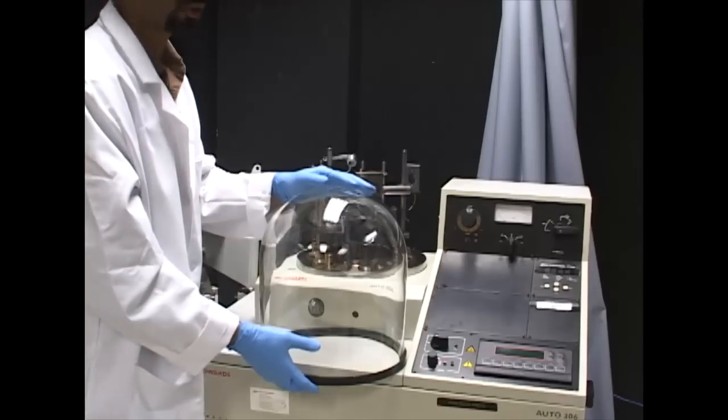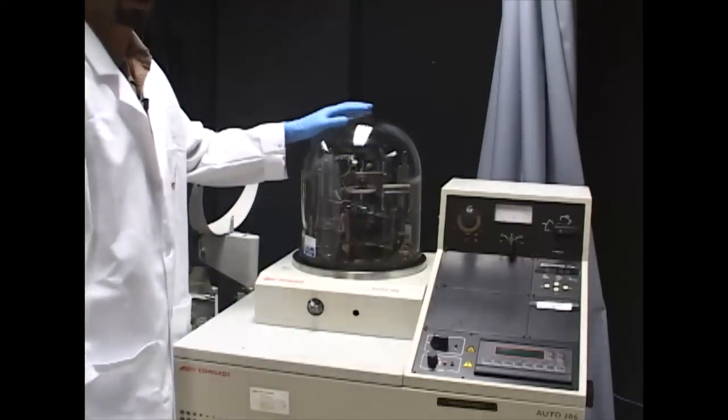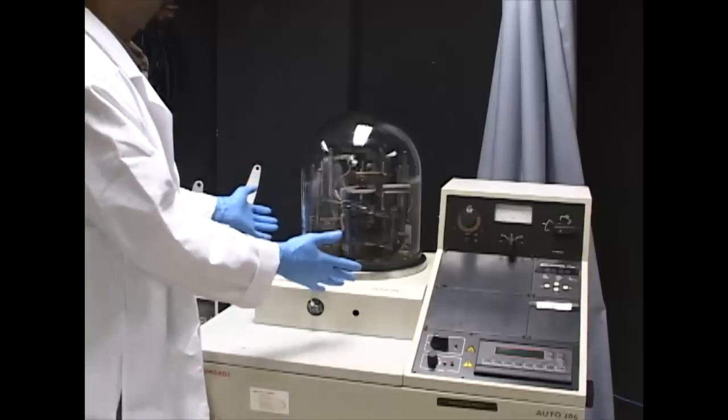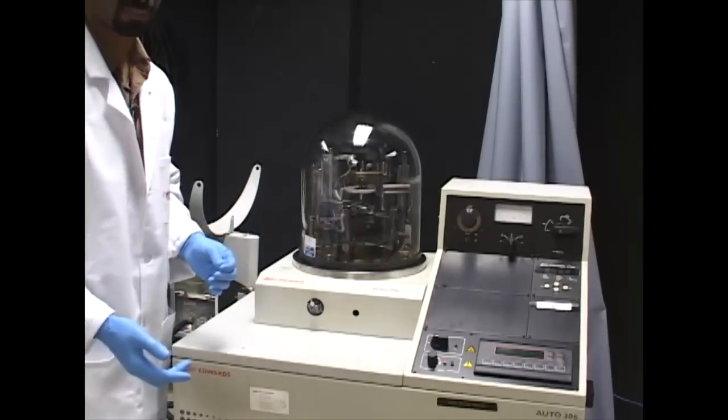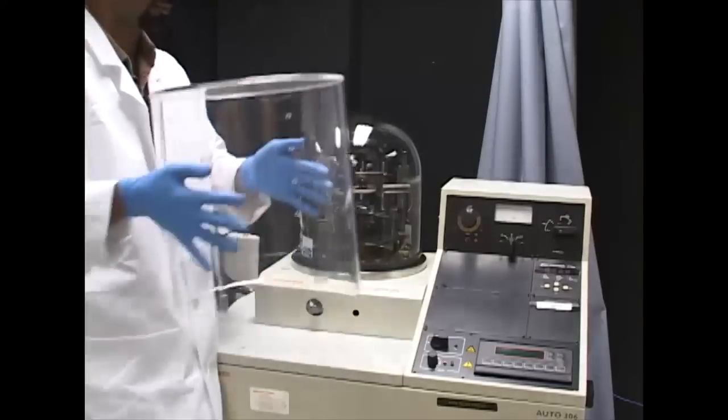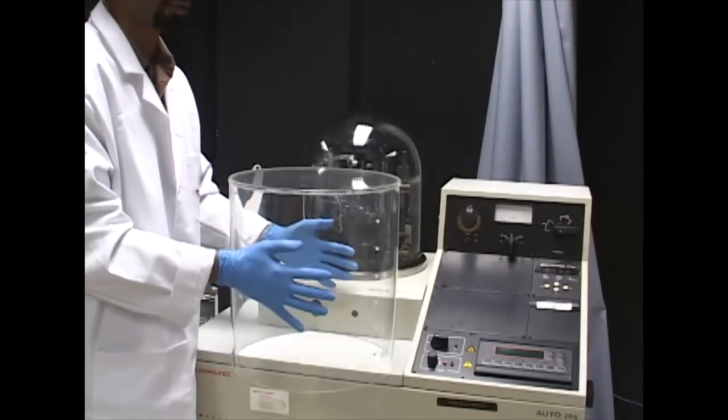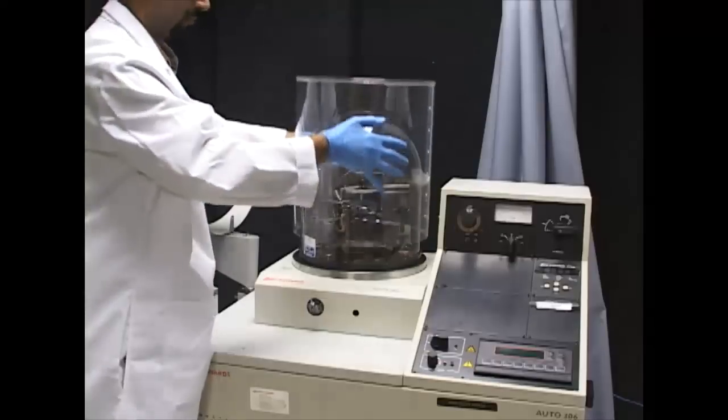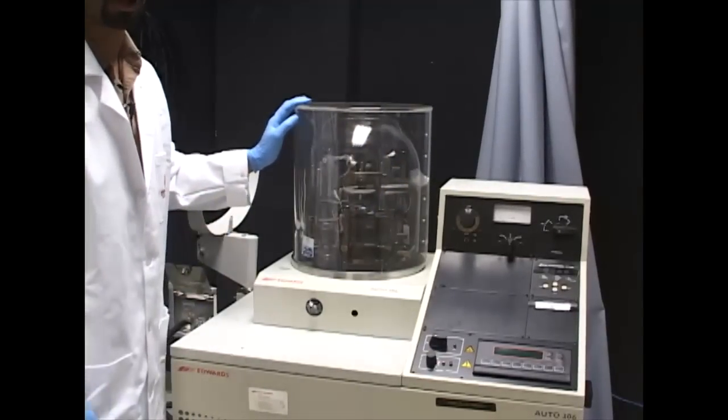This is our bell jar that we use to shield our sample. It helps to create the vacuum for our sample during the thermal deposition. Then we use this external shield implosion device and place it on top of the bell jar to protect us from an accident that might occur.